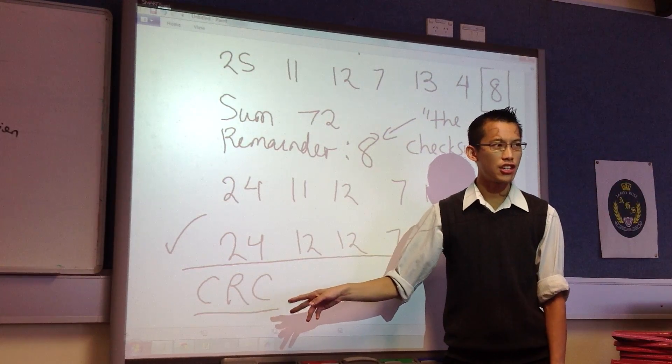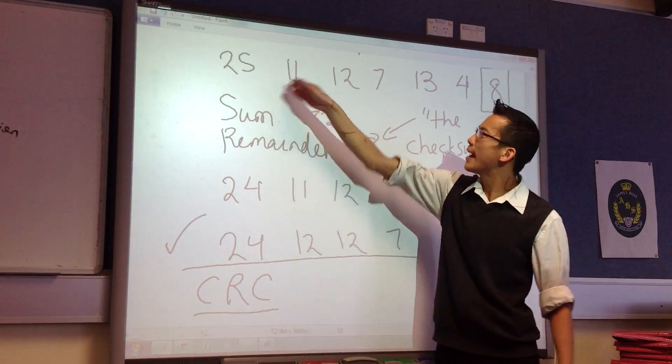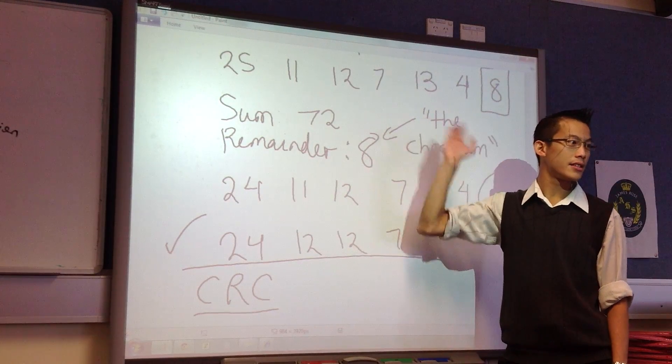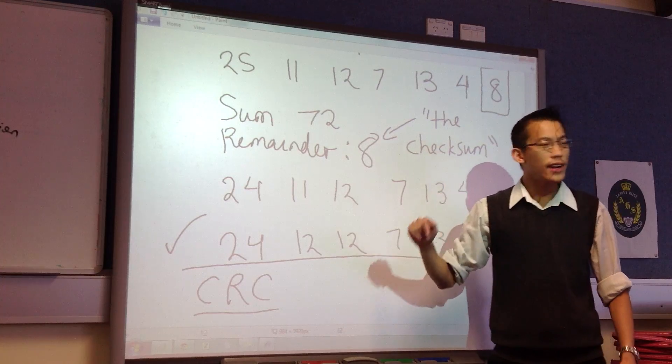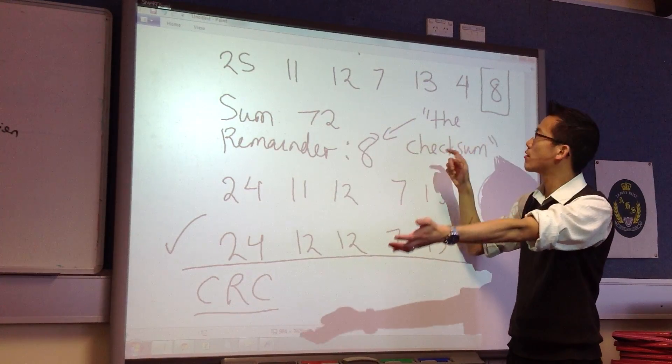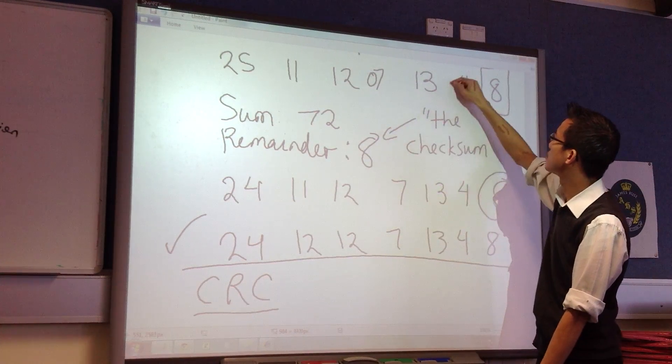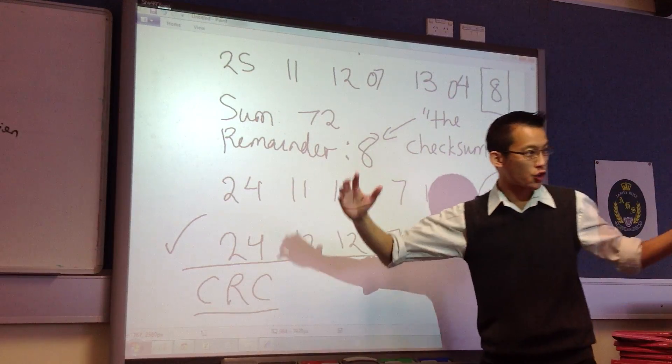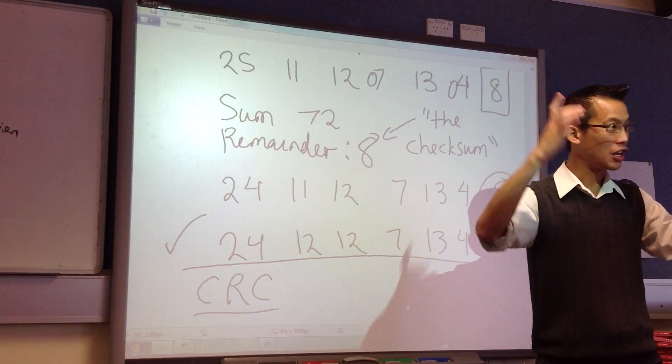What the Cyclic Redundancy Check does is, instead of adding up all of these numbers and then dividing, what it does is it just takes all of the numbers—this is probably a zero—and it just crams them all together into one huge number.